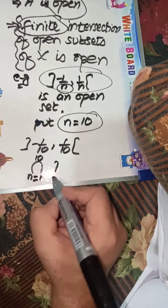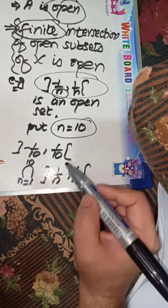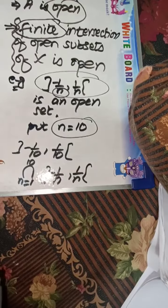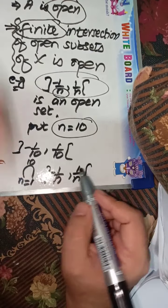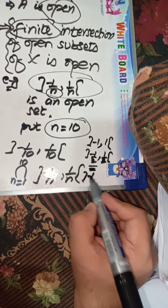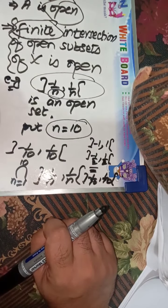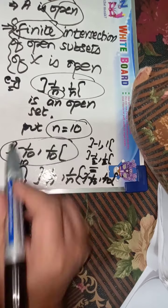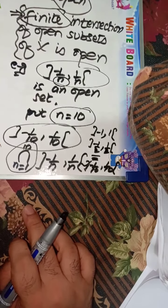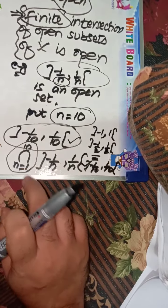Taking the intersection from n=1 to 10 of the intervals (-1/n, 1/n), we get open intervals: (-1, 1), (-1/2, 1/2), and so on, down to (-1/10, 1/10). The intersection of all these open intervals is the smallest one, which is (-1/10, 1/10). So if we put n equal to 10 and take the intersection of all these open intervals, we again get an open set: (-1/10, 1/10). This confirms that finite intersection of open sets is open.